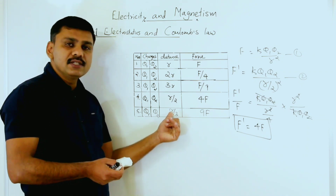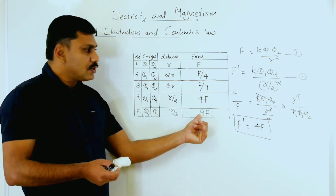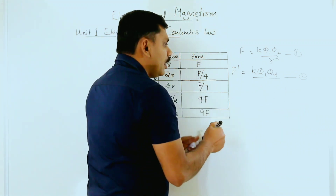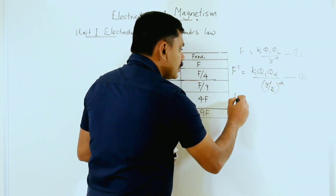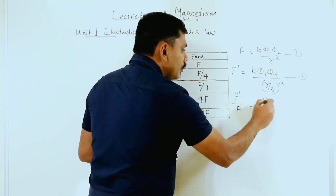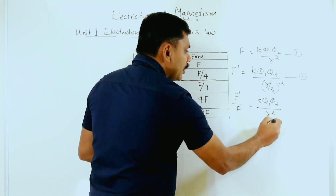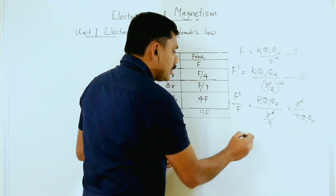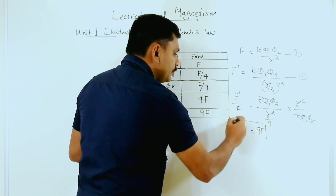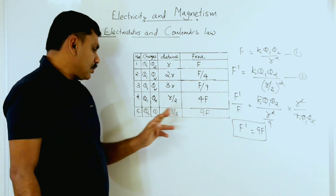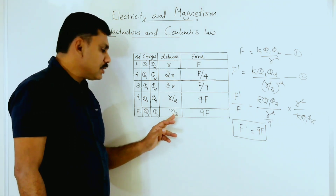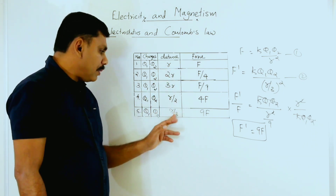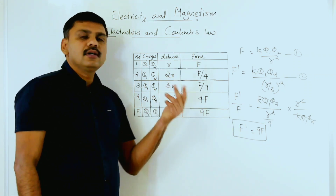In the fifth case, the charges remain the same — q1 and q2 — and the distance is now one-third of the initial value, so the force becomes nine times. You proceed the same way: instead of (r/2)² you put (r/3)². Then F' by F equals k·q1·q2 divided by r²/9, multiplied by r² divided by k·q1·q2. This cancels, giving F' = 9F. If the new distance is r/3, the new force will be nine times the original.